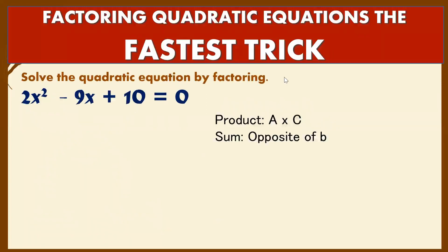All right, fastest trick number 2: 2x² - 9x + 10 = 0. Again, get the product of your A and C, so 2 times 10 is 20. Then you are going to take the opposite of your B. Your B is negative 9, so take the opposite of your B, that is positive 9.